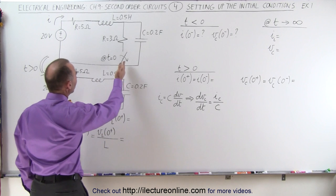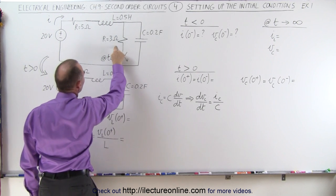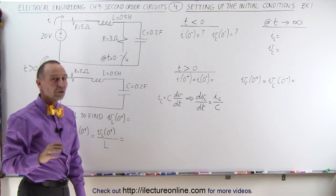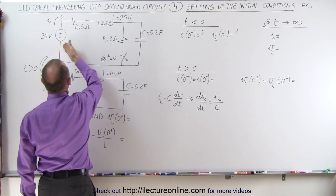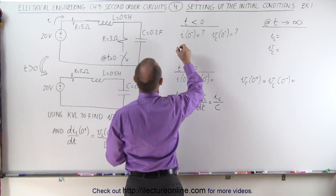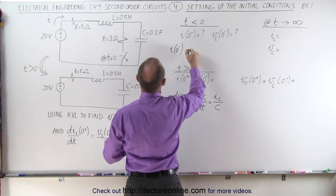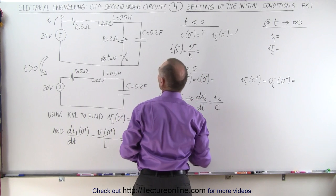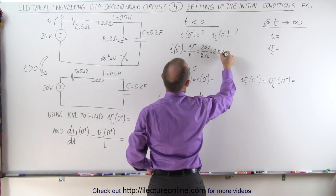Before the switch opens — when the switch is closed — notice we have voltage going through the inductor, through this resistor, through this resistor. We assume the capacitor is fully charged, so there's no current flowing through it. Since the current is not expected to change, there's no opposition to current flow through the inductor, so we basically have a voltage source and two resistors in the circuit. The current before the switch opens is simply 20 volts divided by the total resistance of 8 ohms, which equals 2.5 amps.